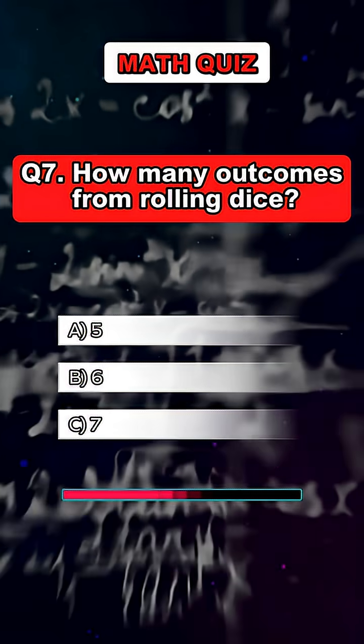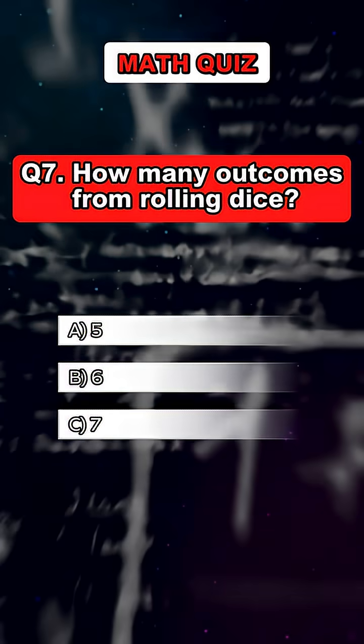Question 7. How many outcomes from rolling dice? Answer: B, 6.